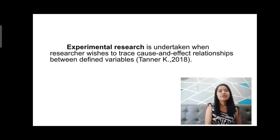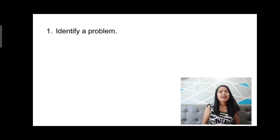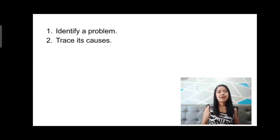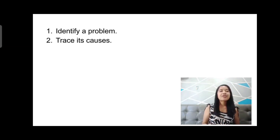So what is experimental research? Experimental research is undertaken when a researcher wishes to trace the cause and effect relationships between defined variables. The first thing we need to do is to identify a problem that we have in the community or the environment. Since I am a teacher, one common problem I encounter inside the classroom is students who have poor reading comprehension skills.